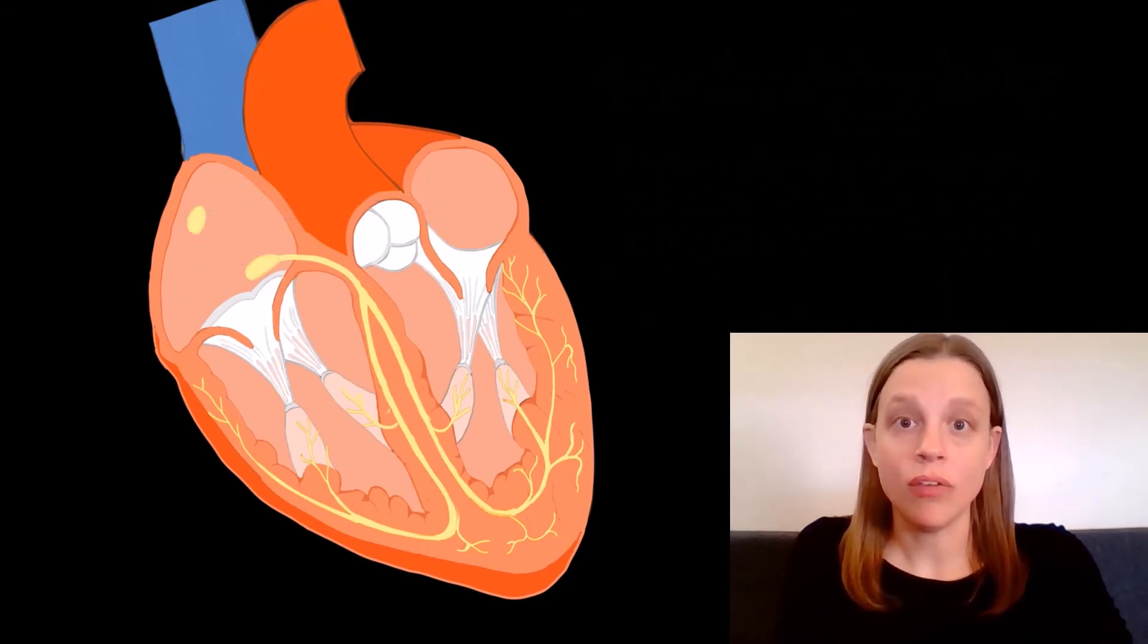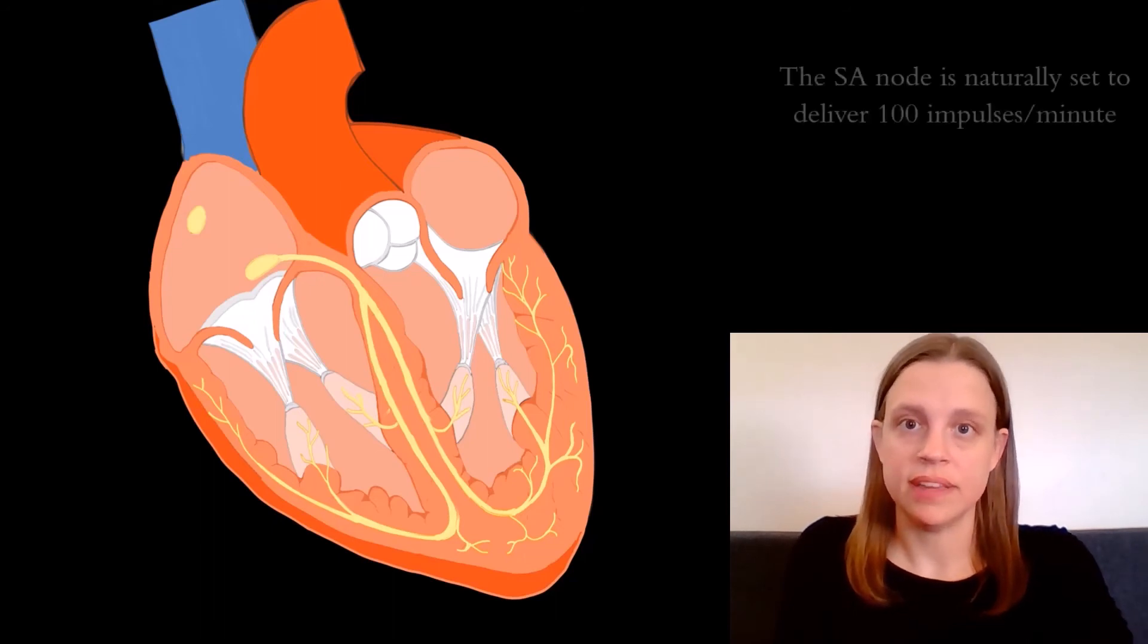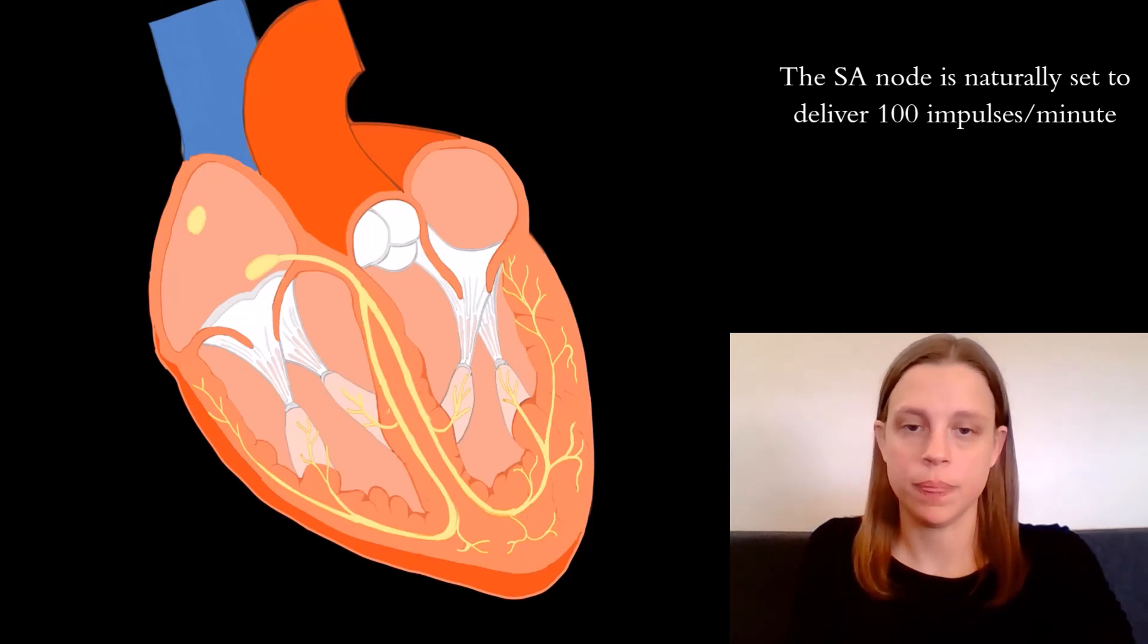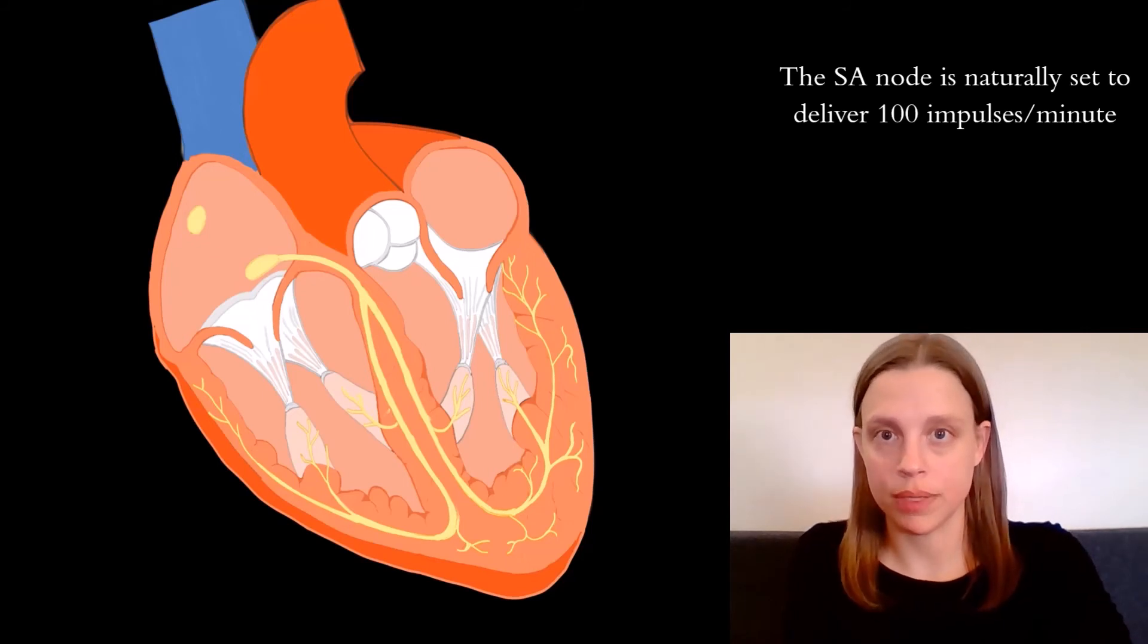Left to its own devices, the SA node generates about 100 electrical impulses per minute. This would translate to 100 heartbeats per minute.